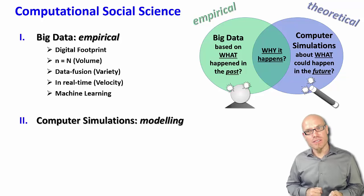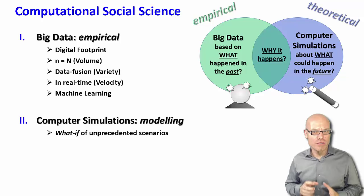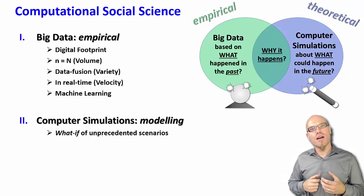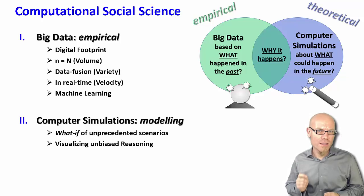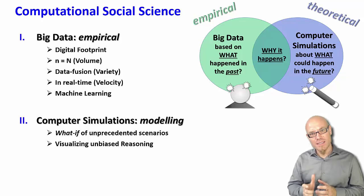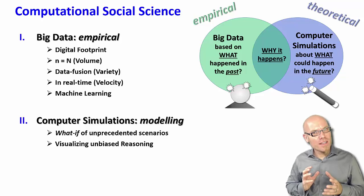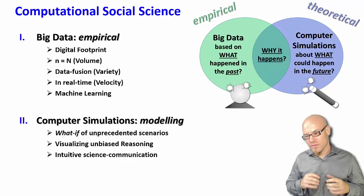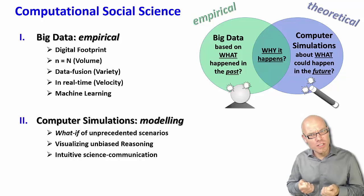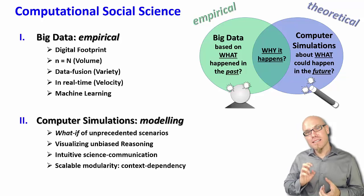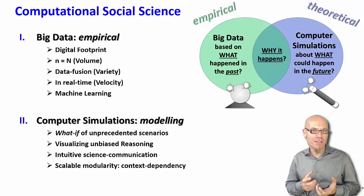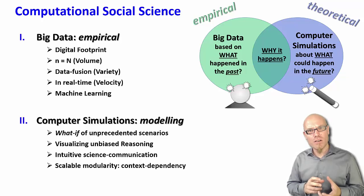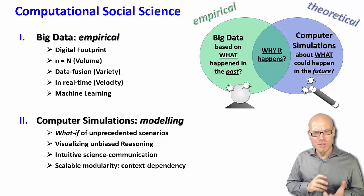Computer simulations also have several characteristics. The what-if logic inherent to algorithms allows us to explore unprecedented scenarios that never existed in empirical reality. It allows for visualization of unbiased reasoning, where formal models help us go further than intuition and stick to our assumptions. It provides an intuitive way to communicate scientific results — no need for knowing differential equations; it's as intuitive as watching a video game unfold. Finally, the modularity of code allows for scalable solutions to adjust for context-dependent particularities: we can reuse code, copy-paste, and adjust our model to very specific local and particular conditions.